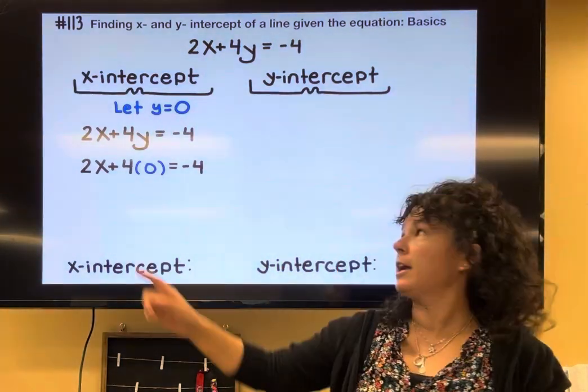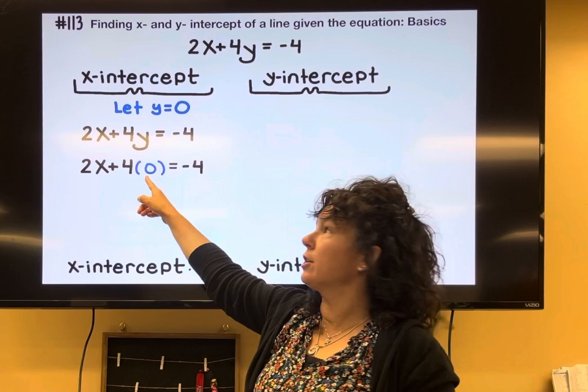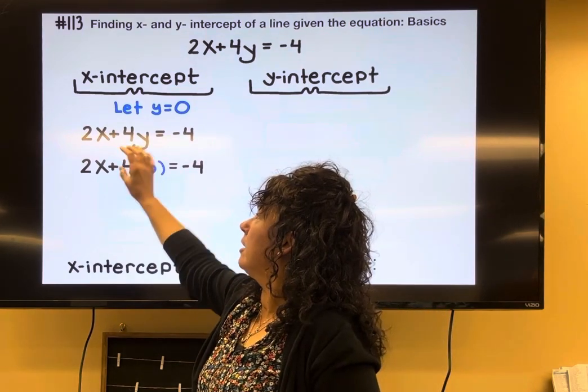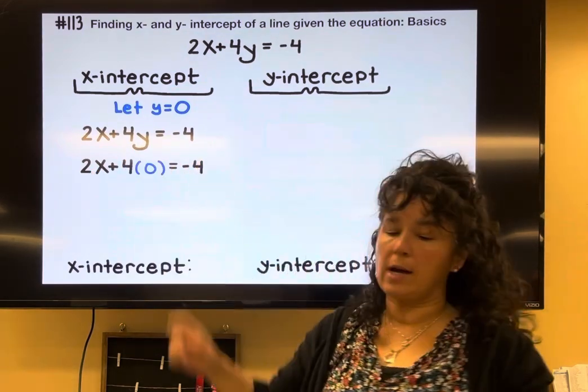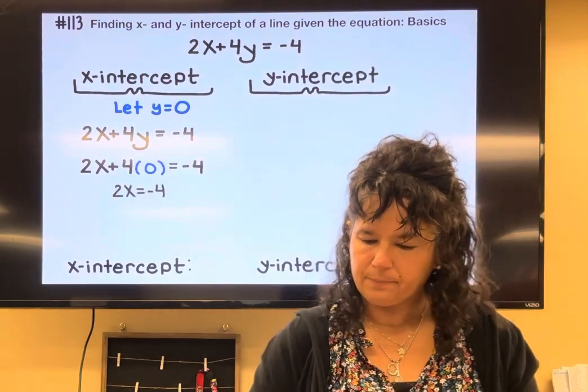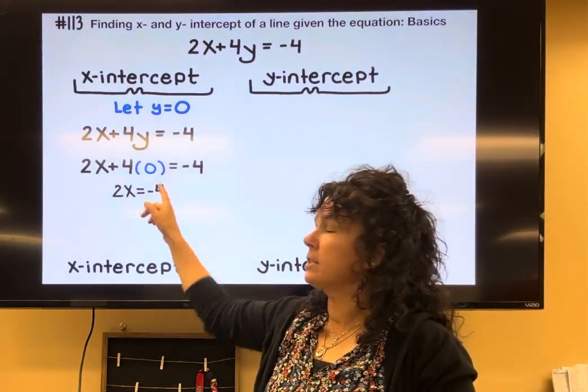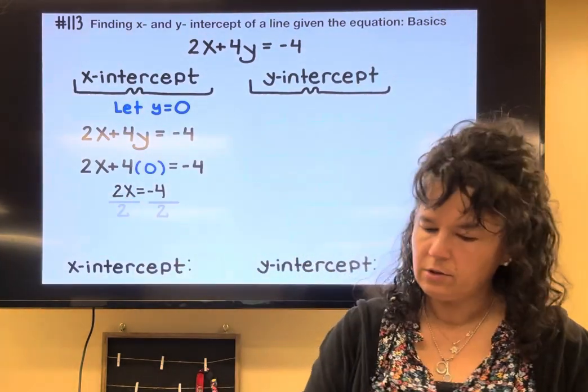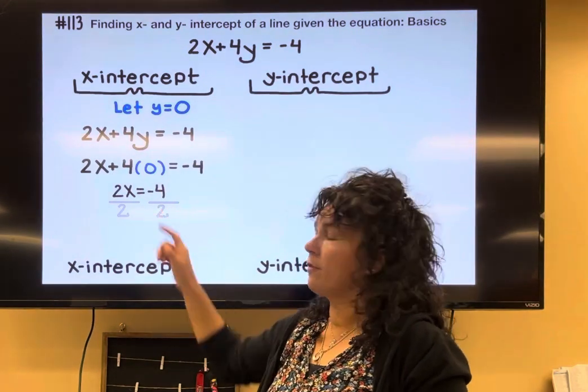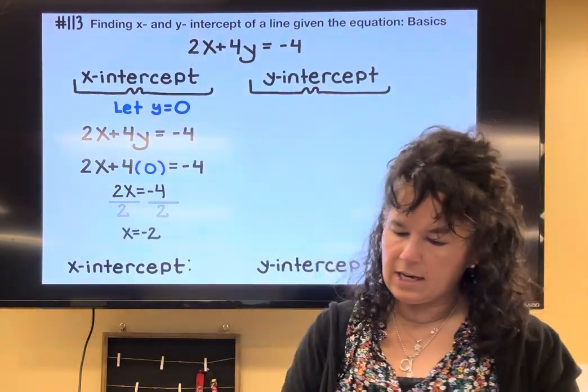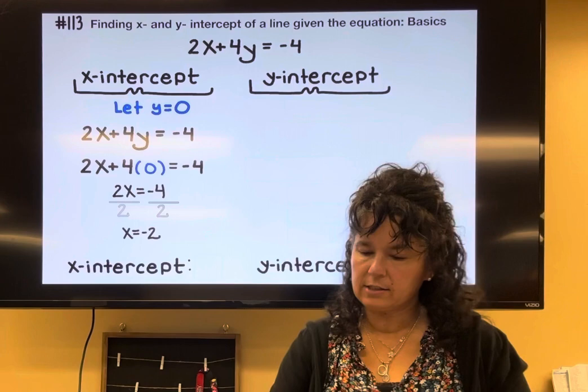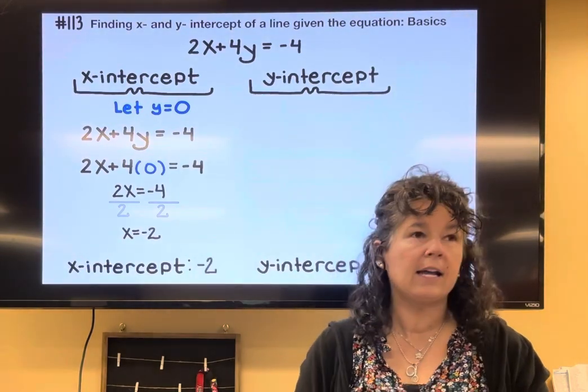Okay, and simplifying, 4 multiplied by zero is zero, so that piece is gone. So all I have left is 2x equals negative 4. Divide both sides by 2, and then negative 4 divided by 2 is negative 2, so my x-intercept is located at negative 2.